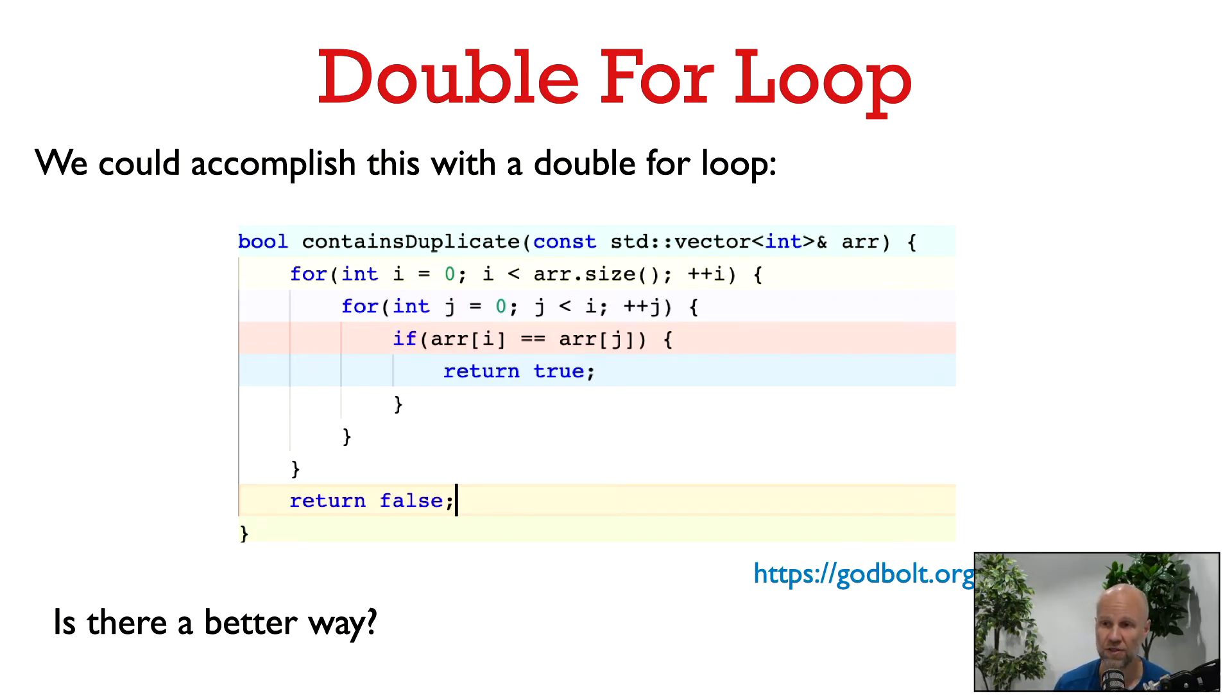With this other for loop, for j equals 0 to i minus 1, we check if aj is equal to ai. What do you think about this solution? Is there a better way to solve this problem?